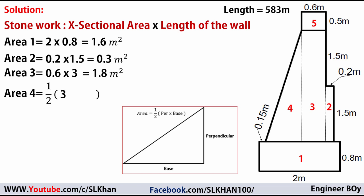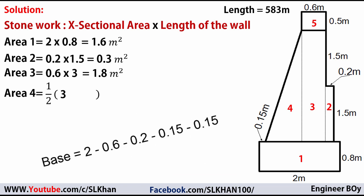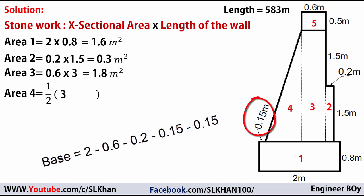The base of shape 4 is 2 meters minus 0.6 meters (base of shape 3), minus 0.2 meters (base of shape 2), minus 2 times 0.15 meters for both sides, giving a base of 0.9 meters. So the area of shape 4 equals 1.35 square meters.